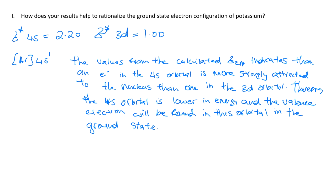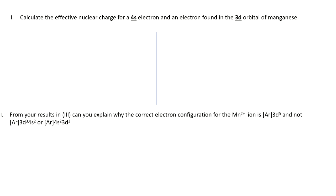But once we start filling up the D orbitals, what we see is that there's a switch where the D orbitals are now lower in energy — the electrons placed in those orbitals are lower in energy than those in the 4s. And that's the basis of the next question, which asks us to do basically the same exercise but now for manganese, a D-block element — calculating the effective nuclear charge for a 4s electron and an electron from the 3d orbital of manganese.